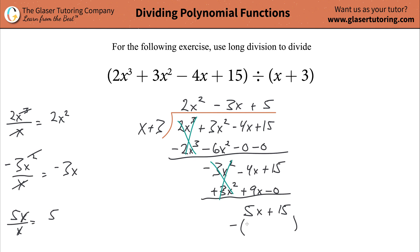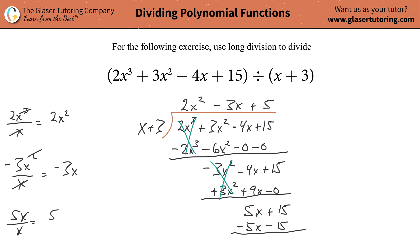5 times x is 5x, and then 5 multiplied by 3 — sorry, a fly flew into my mouth — that's going to be a positive 15. Now take down that negative and distribute it to each term inside those parentheses. Don't turn the positives into negatives in real life — but you have to for this problem. And you're going to have no remainder.